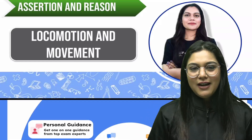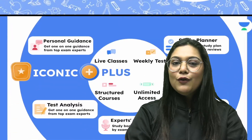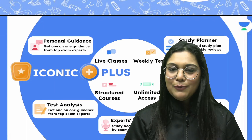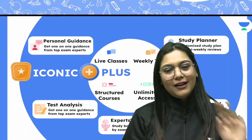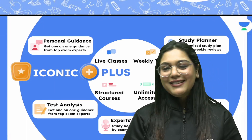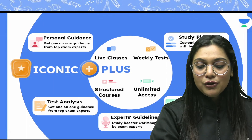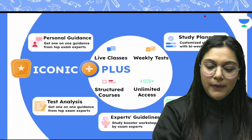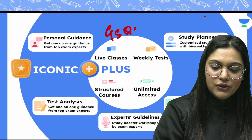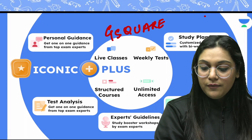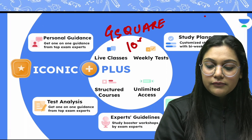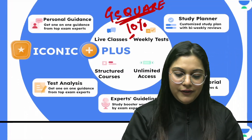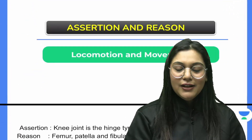Let's start with Locomotion and Movement. Before we start, I want to tell you that my paid batches are Iconic and Plus subscription. You can take this subscription and use a code for your discount — that is G-Square — and you will get 10% off. Let's start with Assertion and Reason.